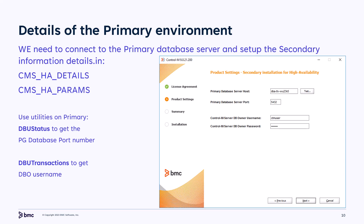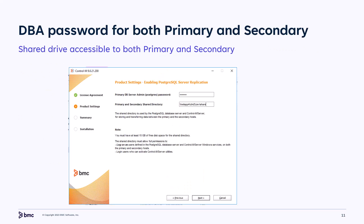To verify the host and port numbers, you can run DBU status utility, or under CTM menu, database menu reports status on the primary machine. And the DBU transactions utility to verify the DBU owner, or CTM menu, database menu reports, transaction report. DBA password and shared path configuration for secondary installation.